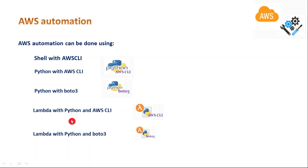You can also execute Python programs using AWS Lambda. Lambda is a serverless service — essentially like an editor where you write code, but unlike a notepad, Lambda actually executes your program based on the language. Lambda currently supports Node.js, JavaScript, Python, C#, and recently Golang as well.